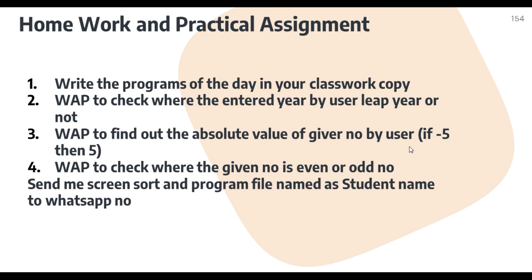Third homework: write a program to find the absolute value of a given number — if the user enters minus five, it should output plus five; if already positive, say the number is already in absolute form. Fourth: write a program to check whether a given number is even or odd — the user can enter any value, positive or negative, and the program should check if it is even. Thank you and have a nice day!